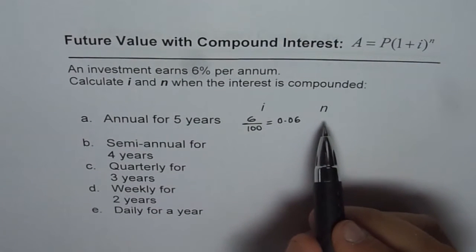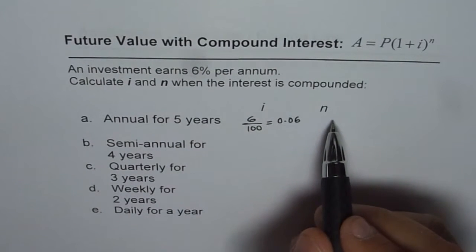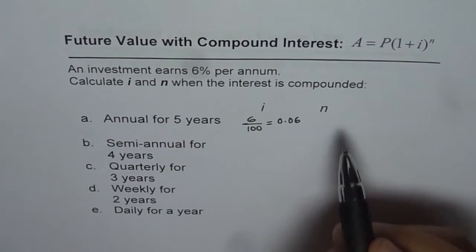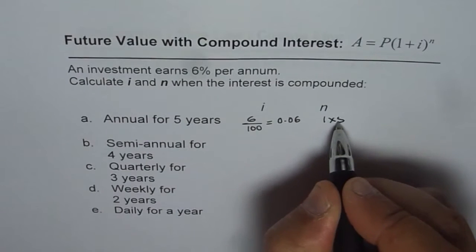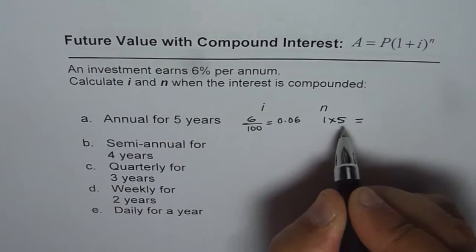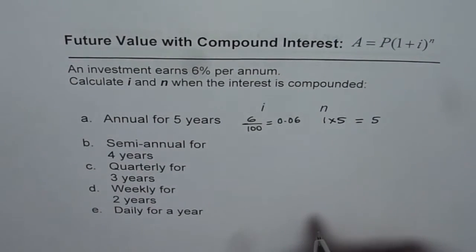Now as far as the compounding periods are concerned, 5 years and every year once. So it will be 1 times 5 or 5 times 1. That means 5 compounding periods.